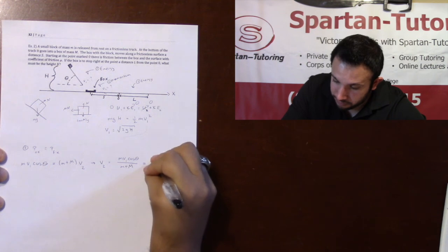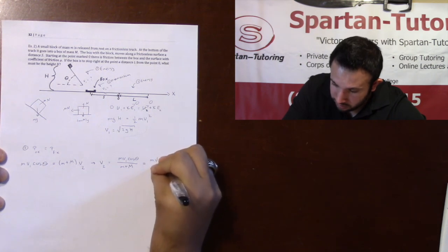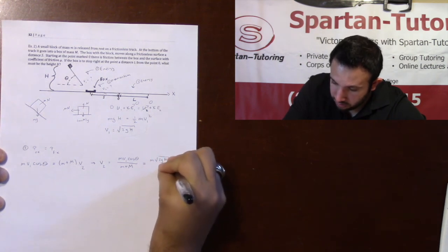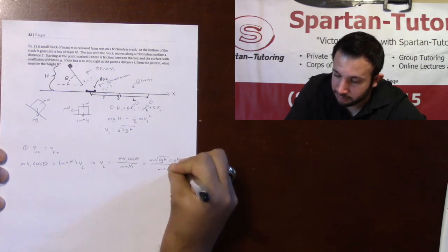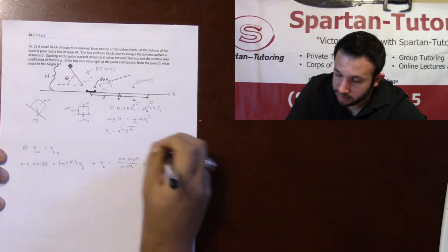So I take a little m square root 2GH cosine theta over the combined masses of little m plus capital M. And this will be my V2.